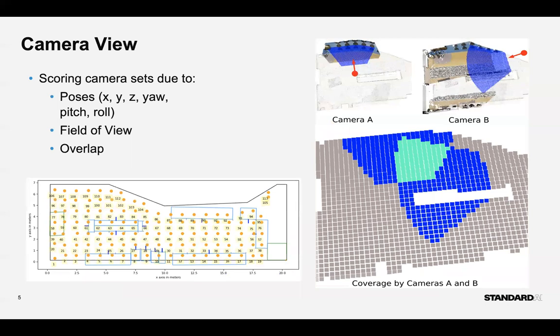For such an optimization, it is very important to correctly model the view of the camera or the volume of the store environment visible to a camera. To this end, we project each camera's view on the 3D point cloud representation of the environment and model the camera's view as the set of voxels visible to the camera.